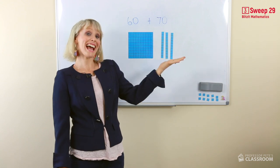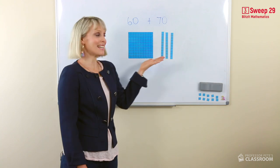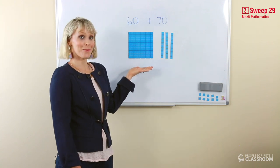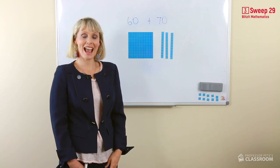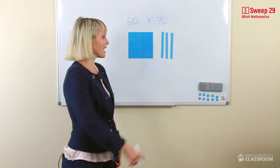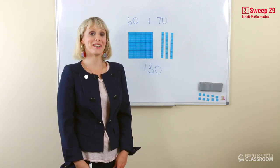Ta-da! We have regrouped. Ten tens is 100, so we say and write thirteen tens as 130. Well done.